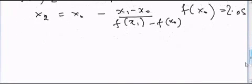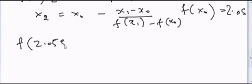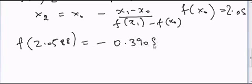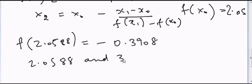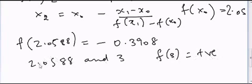So now if we again solve this equation, we have f of 2.0588 is equal to negative 0.3908. And now that means that the root lies between 2.0588 and 3, because f of 3 is equal to positive, right?